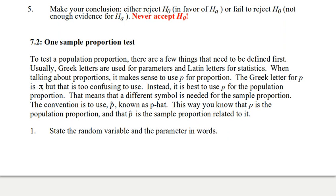To test a population proportion, there are a few things that need to be defined first. Usually, we use Greek letters for parameters and Latin letters for statistics. When talking about proportions, it makes sense to use P for the population proportion. The Greek letter for P is pi, and that's a little too confusing. So instead, we use P for population proportions.